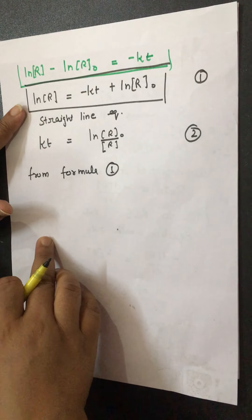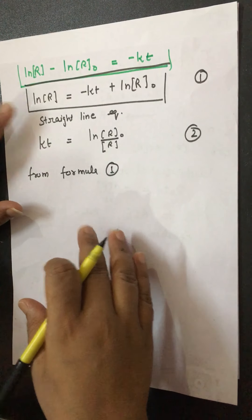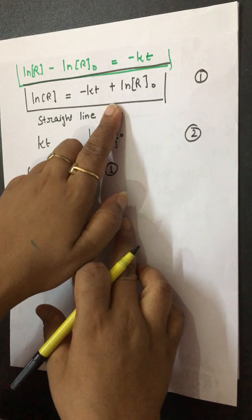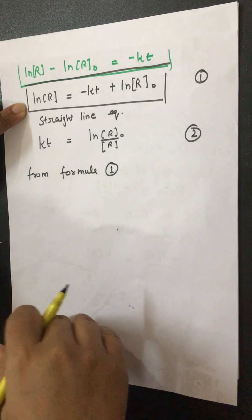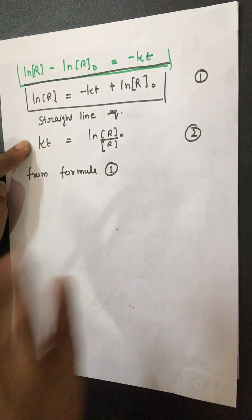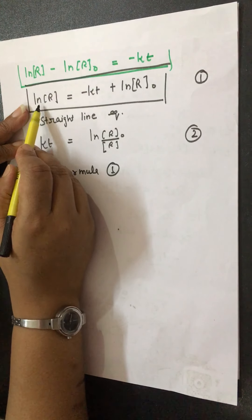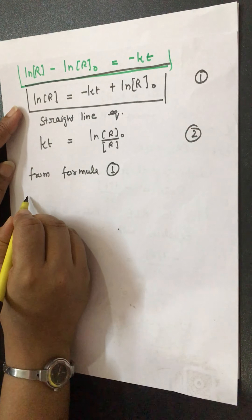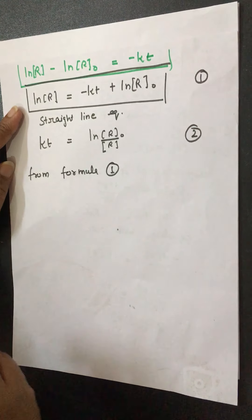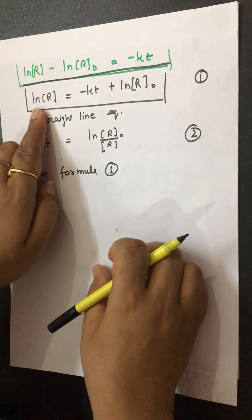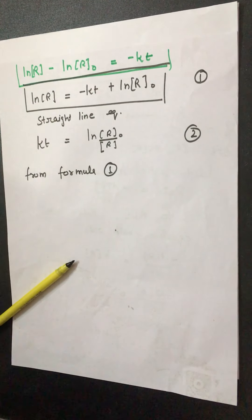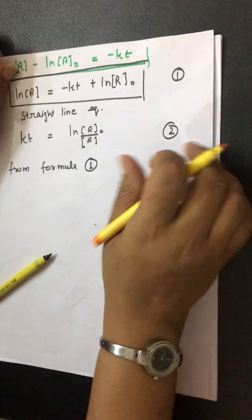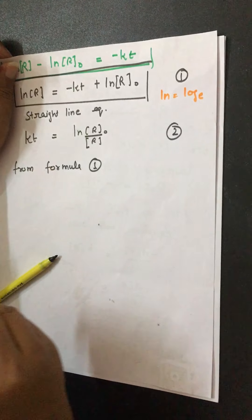First order reactions have many formulas and exam questions can be set using any of them, so you must know each one. From formula 1, you can derive all other formulas. If I convert log base e (ln) to log base 10, I multiply by 2.303. Remember: ln is also known as log base e, and to convert log base e to log base 10, multiply by 2.303.